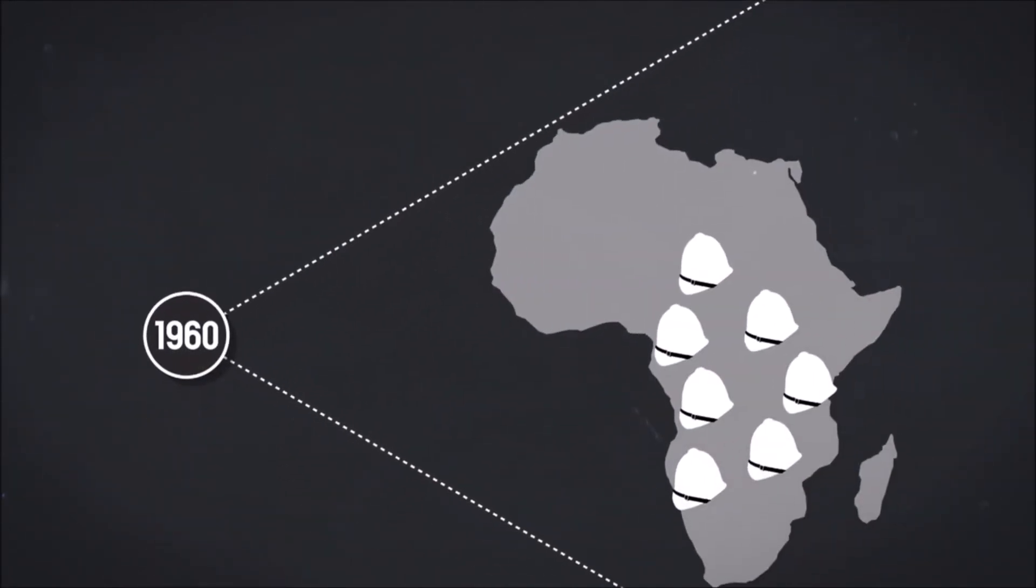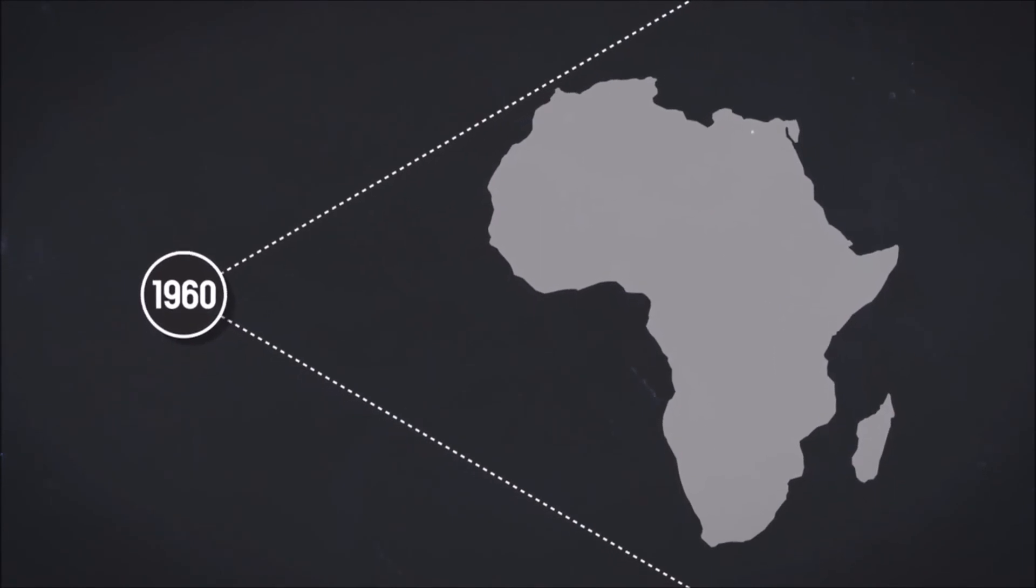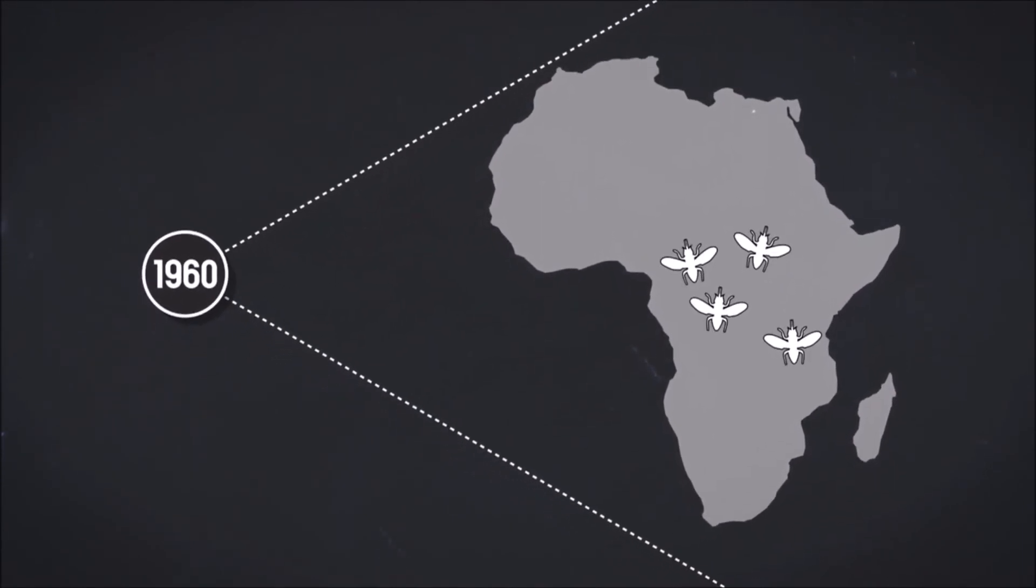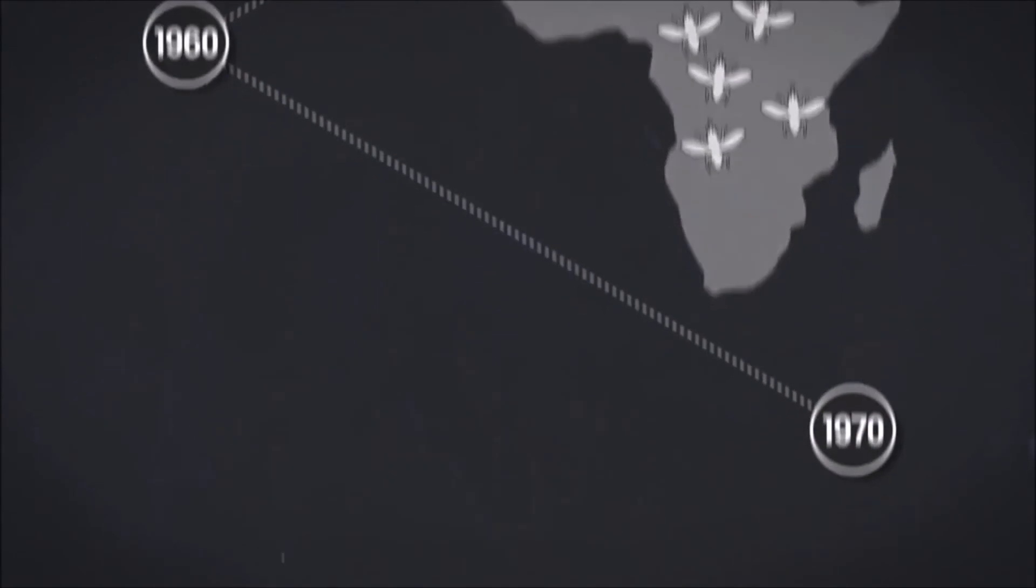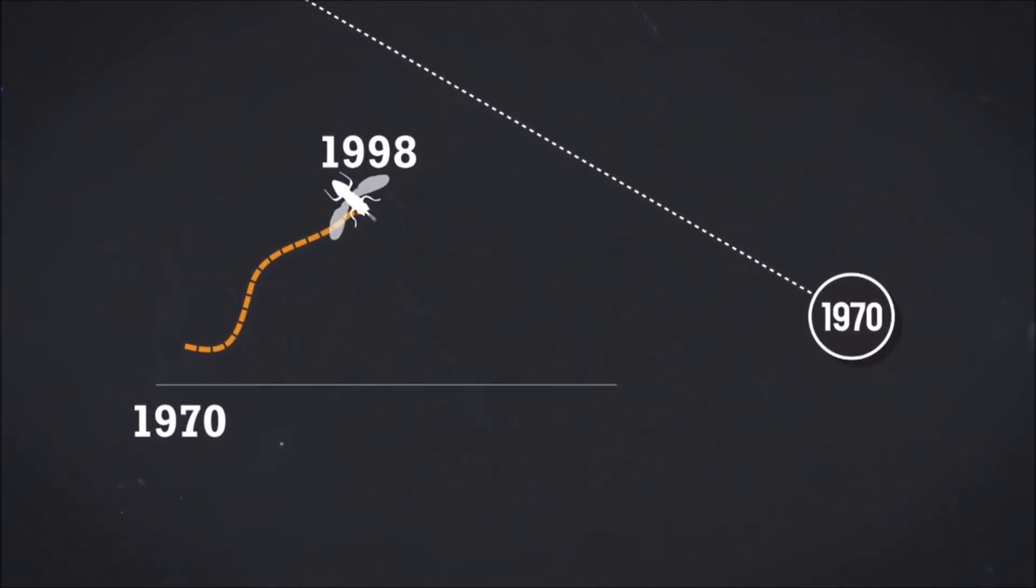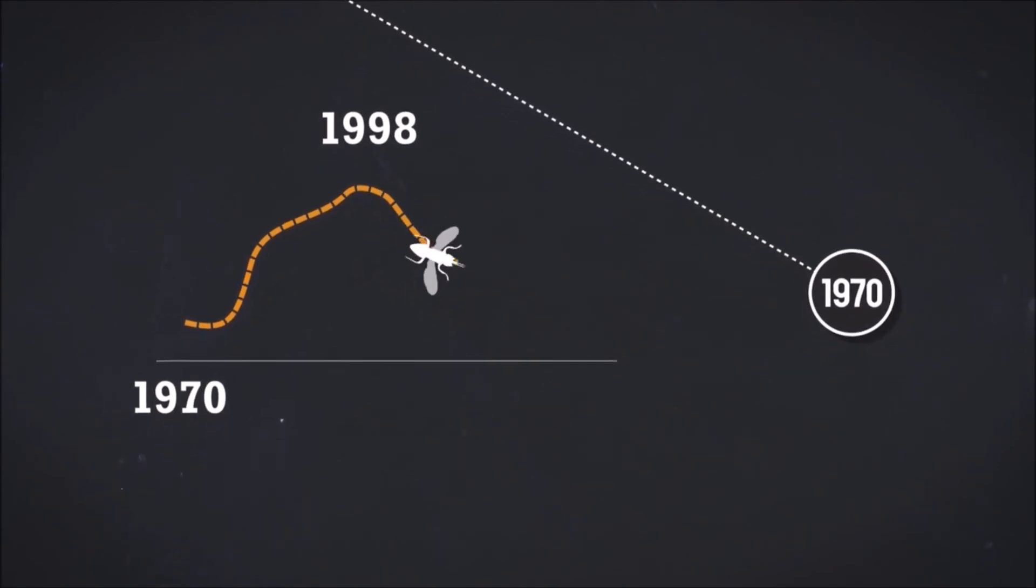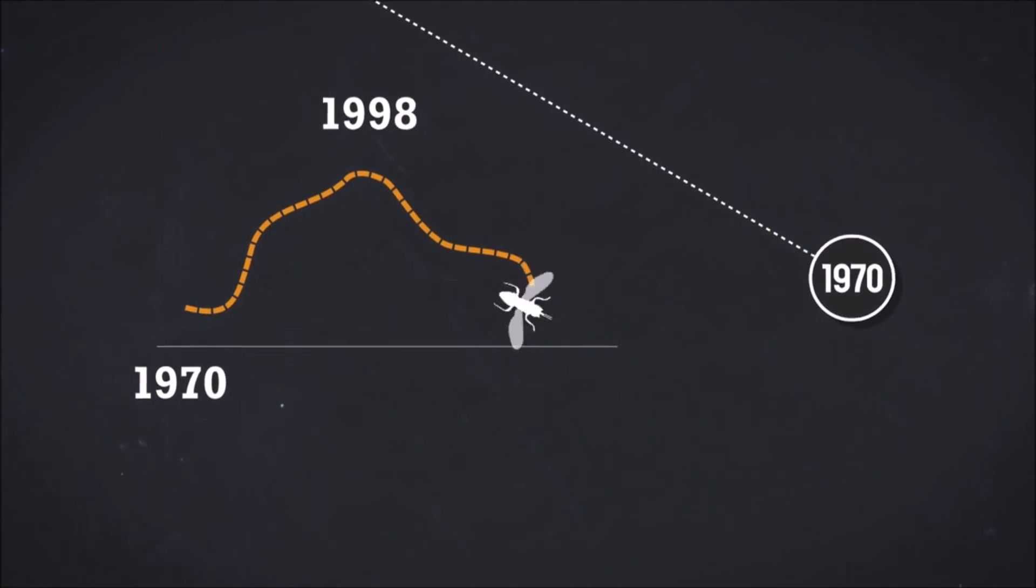In the 1960s, as the colonizers departed from most of the affected countries, interest in the disease declined and the tsetse fly reappeared. An epidemic broke out in 1970 and reached its peak in 1998. Efforts made since have seriously reduced the number of cases, and the World Health Organization has set itself the objective of eradicating sleeping sickness by 2020.